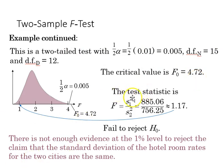Next, we can identify our test statistic, which is going to be the variance of sample one over the variance of sample two, which we found before, and that gives us 1.17.